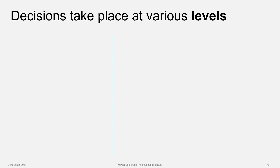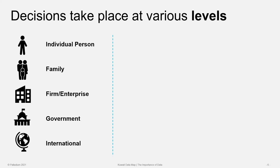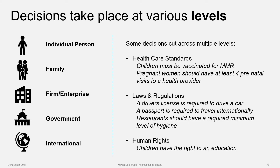These decisions take place at various levels: at the level of the individual person, the family or household, the level of an organization or enterprise, the level of government, and even internationally. At each one of these levels, different types of data can help in decision-making, and oftentimes the same data might be used at different levels. Some decisions also take place at multiple levels. For example, in health, we establish care standards for children such as vaccination requirements, which affect the individual child but also the family, and these are set at the level of society, usually by the government such as the Ministry of Health.